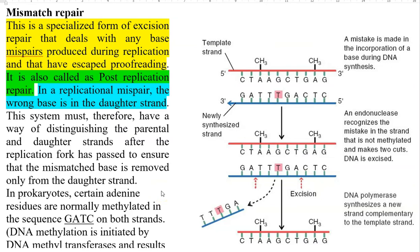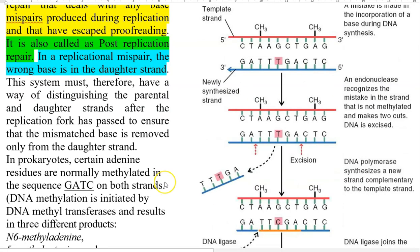In replicational mispairs, the wrong base is usually present in the daughter strand, that is the newly synthesized strand. Thus, the cellular system must have some property to distinguish the parental as well as daughter strands after the replication fork has passed, in order to ensure that the mismatched base is removed from the daughter strand.